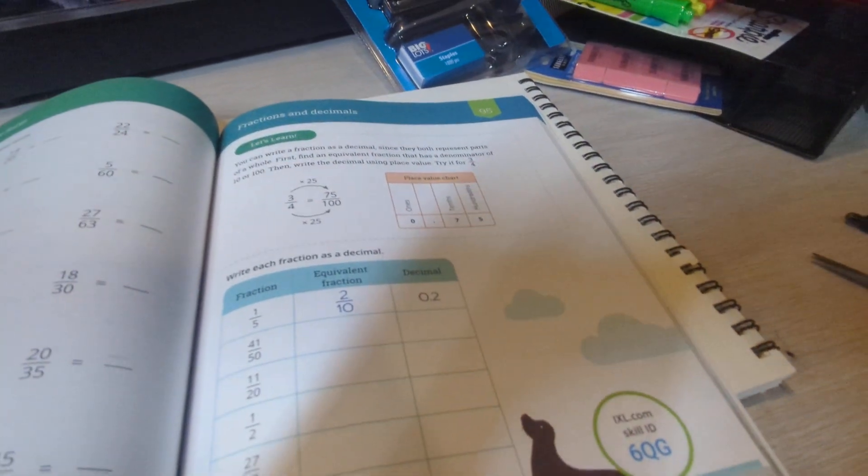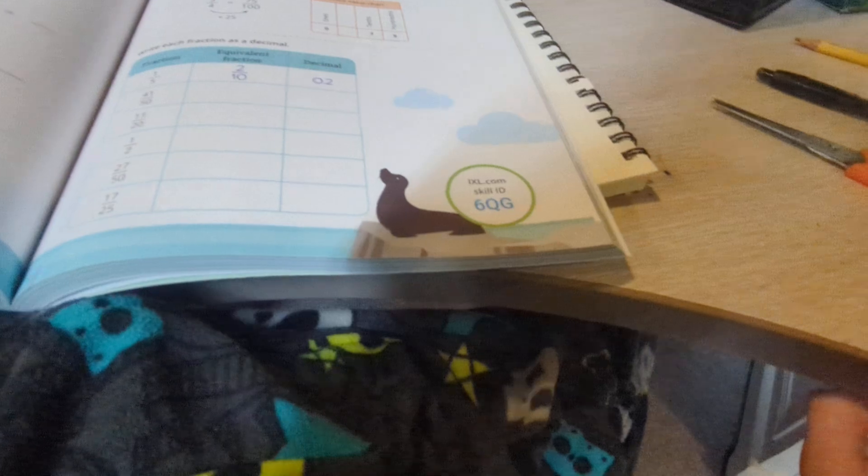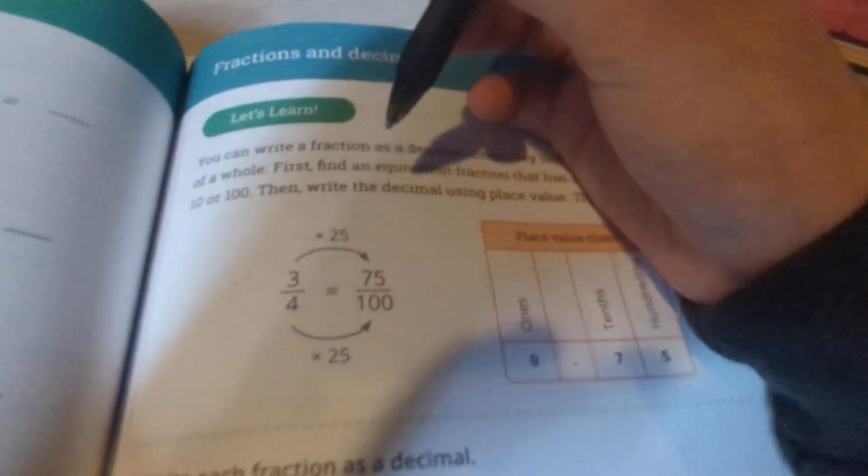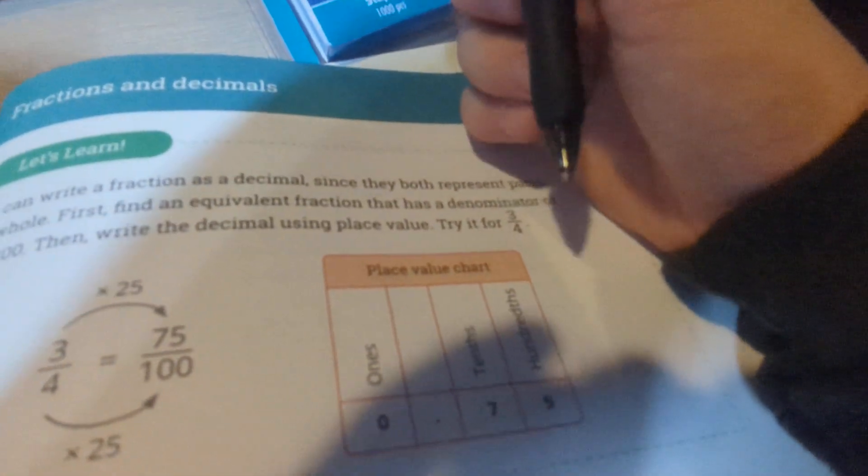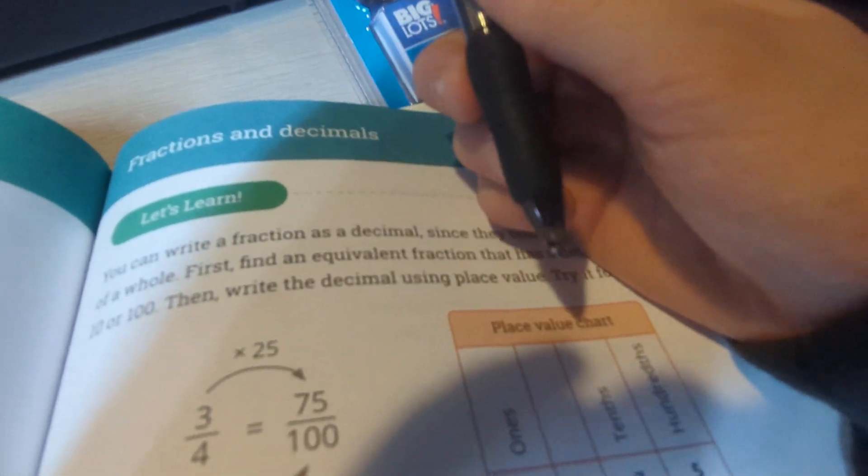This is a good day and now let's start teaching you how to do fractions and decimals for 5th grade math. So you can write a fraction as a decimal since they both represent parts of a whole.